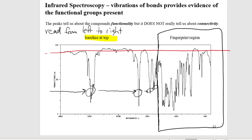What's happening, and what do these peaks mean? I use the word 'diagnostic' — you can attribute that to the peaks that are the most telling or meaningful. The fingerprint region is a hot mess to deal with; we want the more diagnostic peaks that stand out and give meaning to what's happening.